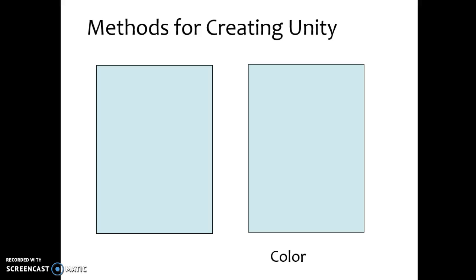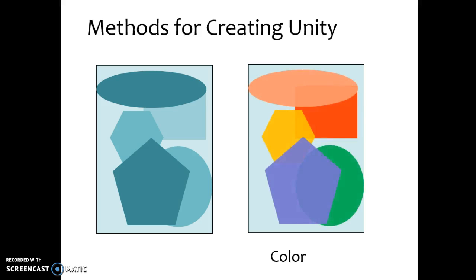The first method for creating unity is using color. By using all of the same colors in a monochromatic color scheme, all of the separate shapes seem to go together. If instead you fill all of the shapes with different colors, you will find that it is a much less connected and much more disjointed work of art.